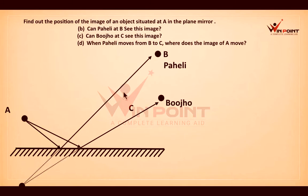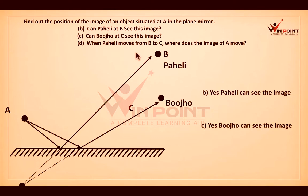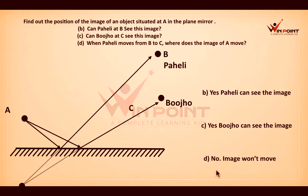Can Paheli at B see this image? Yes, she can see this image. Can Bhujo at C see this image? He can also see this image. When Paheli moves from B to C, where does the image of A move? The object is not moving, so the image is not going to move — the image won't move.